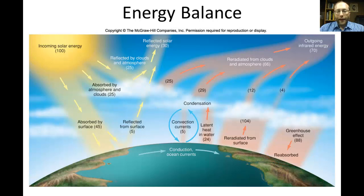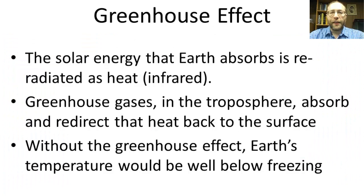The greenhouse effect is that the solar energy that the Earth absorbs is re-radiated as heat, which is infrared radiation. The greenhouse gases are gases that in the troposphere absorb and redirect that heat back to the surface. Without the greenhouse effect, temperatures would be well below freezing — which is in fact what happens on the Moon, where in the shade the temperature is a couple hundred degrees below freezing. On Venus, there is a runaway greenhouse effect; its atmosphere is about 90% carbon dioxide and the surface is hot enough to melt lead — hotter than Mercury.